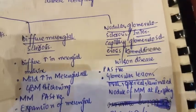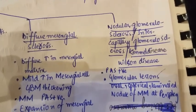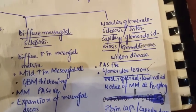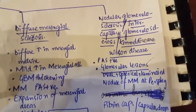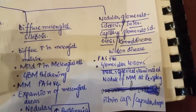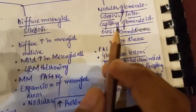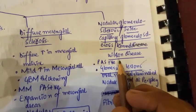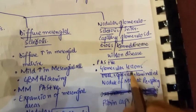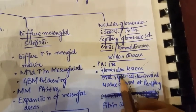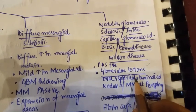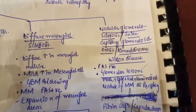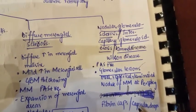Nodular glomerulosclerosis, previously known as intercapillary glomerulosclerosis or Kimmelstiel-Wilson disease, is similar to diffuse mesangial sclerosis but with some differences. The mesangial matrix becomes positive for periodic acid-Schiff stain. Glomerular lesions are present that are oval, spherical, and laminated, located at the periphery of the glomerulus. Fibrin caps and capsular drops are also present.